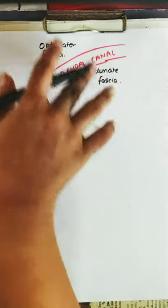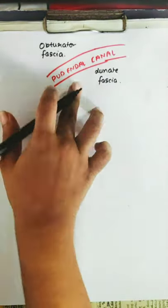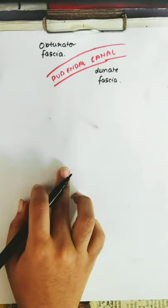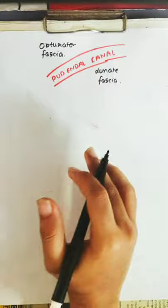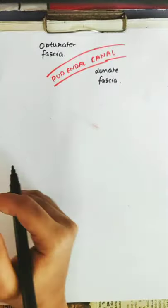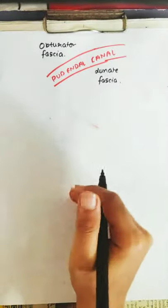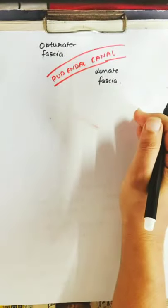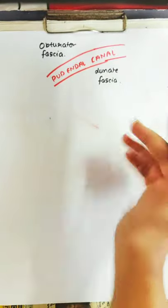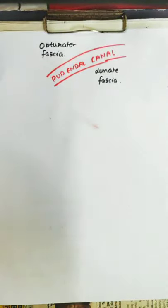So another definition you can write: it is a canal extending from the obturator fascia to the lunate fascia, or present between these two fascias. Or you can also write that it extends from the deep perineal pouch till the lesser sciatic foramen. Now I'll be explaining what are the contents present inside this pudendal canal.